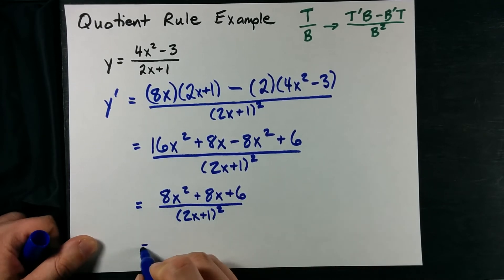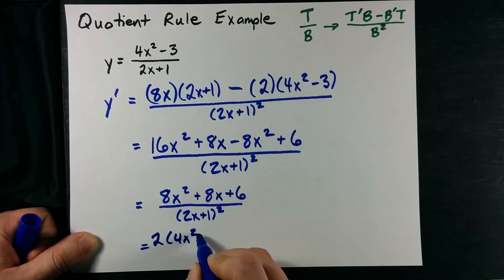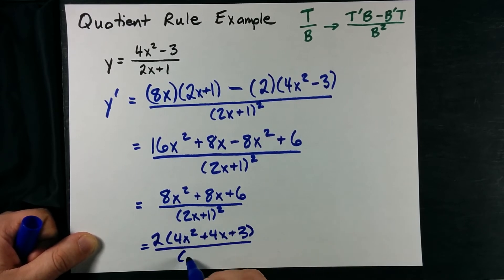All over 2X plus 1 squared. I could factor that a little more. I can pull out a 2. That gives me 4X squared plus 4X plus 3. Hope you like factoring.